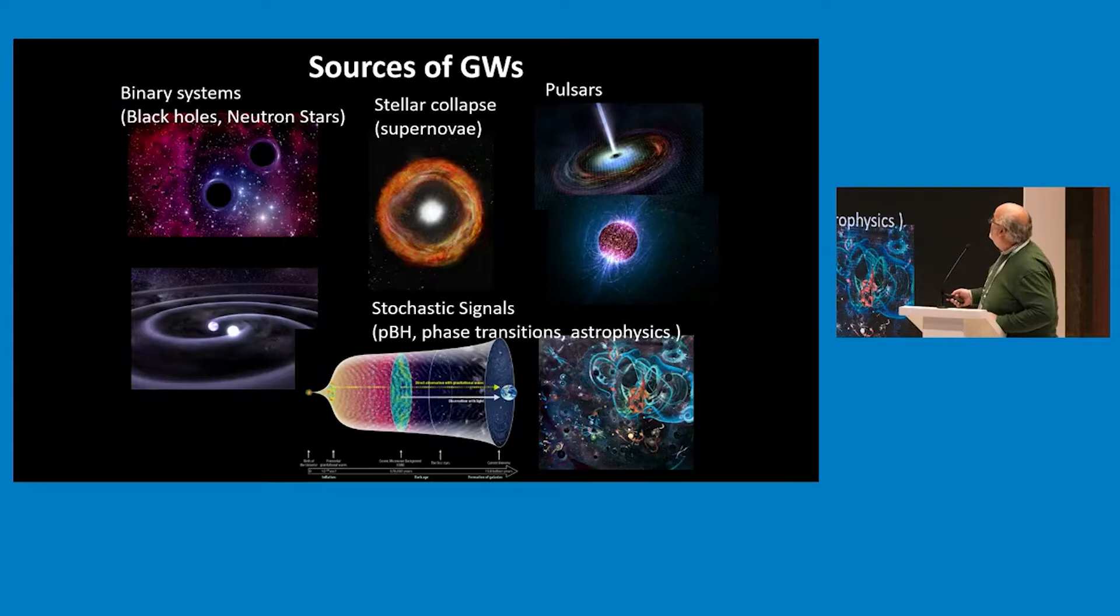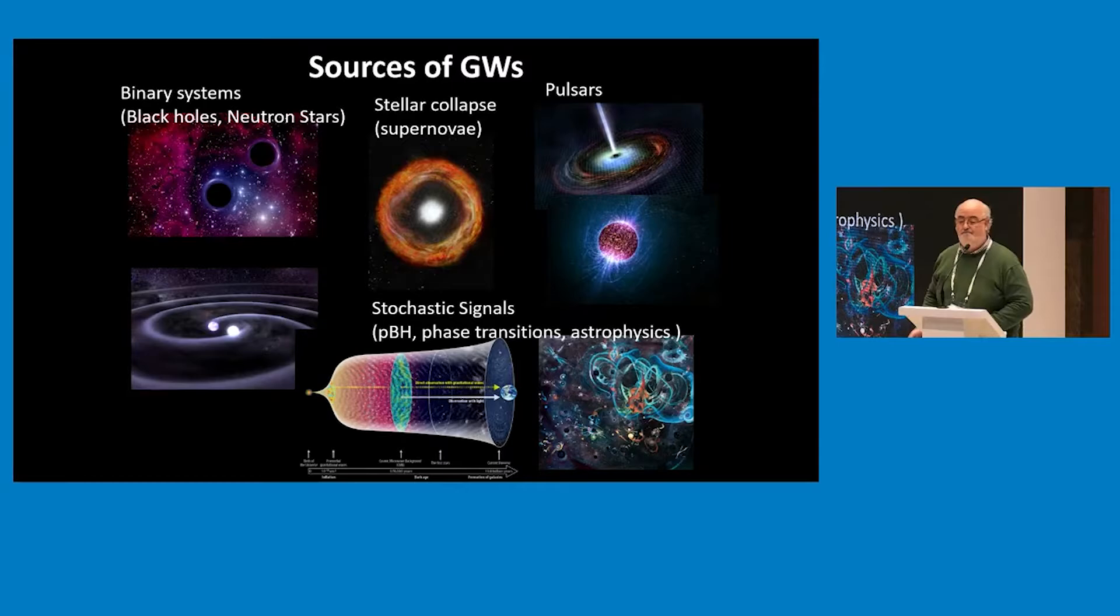We expect gravitational waves coming from binary systems, from supernovae, from pulsars. And also, we expect something called the stochastic signal for gravitational waves, which essentially allow us to go all the way back to the Big Bang. Because with gravitational waves, you can cross the border of where the universe became transparent.